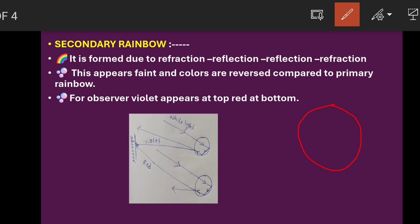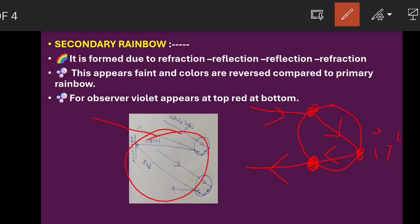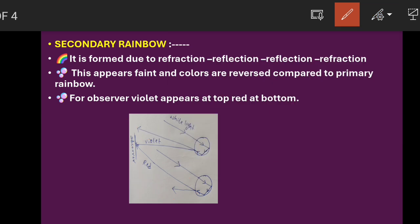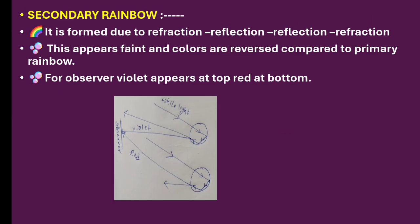For the primary rainbow, the sequence is: refraction, then dispersion, then total internal reflection, then refraction again — refraction, reflection, refraction. For the secondary rainbow, the sequence is: refraction, reflection, reflection, refraction — two refractions and two reflections.